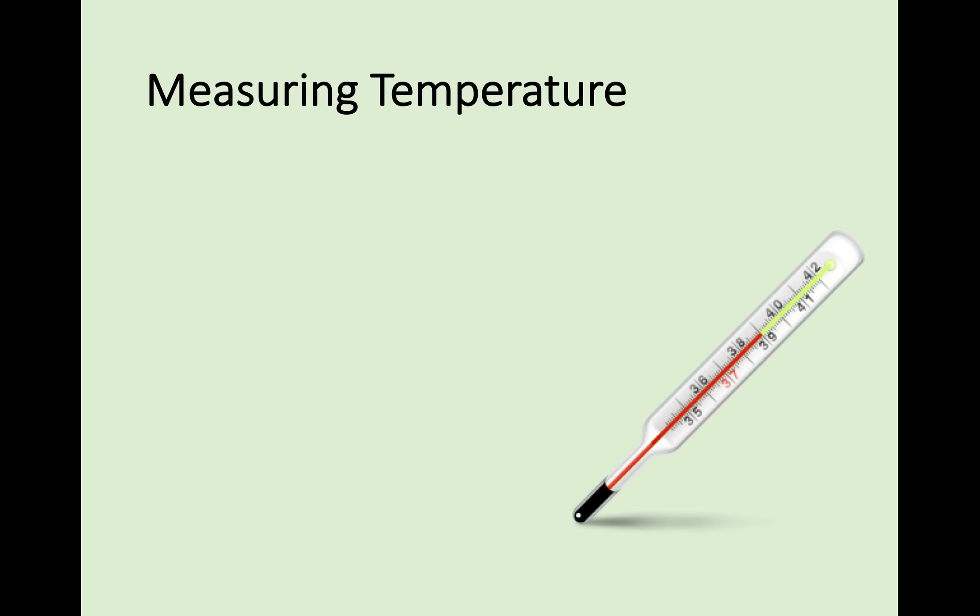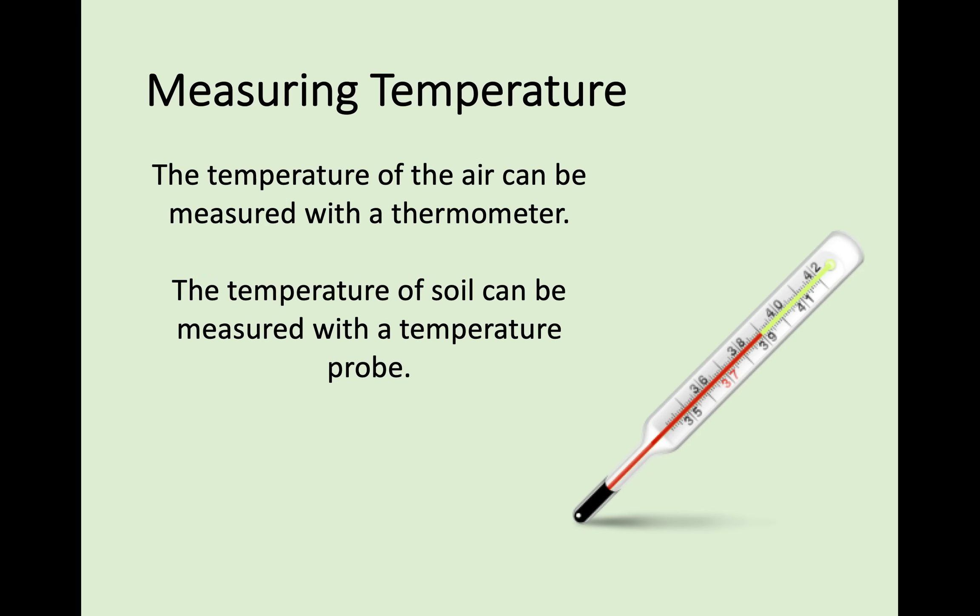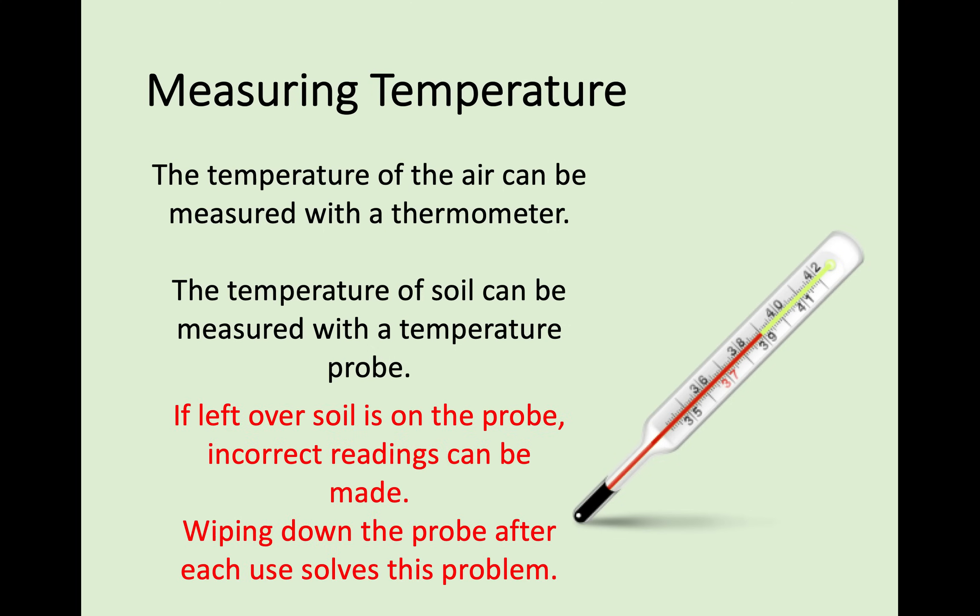Next, we look at temperature as an abiotic factor. If you're measuring air temperature, you use a thermometer. If you're measuring soil temperature, you use a temperature probe which you dig into the soil. One issue: if you take out the probe and it has damp soil left on it and then take another reading, that leftover soil can give an incorrect reading. So wipe down the probe between each measurement to ensure accuracy.